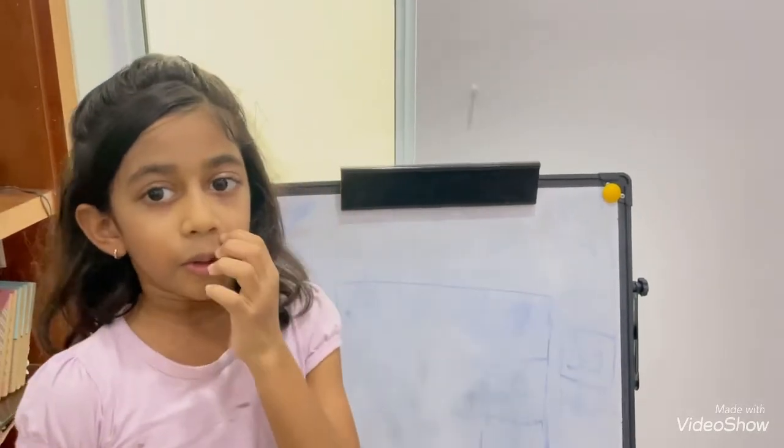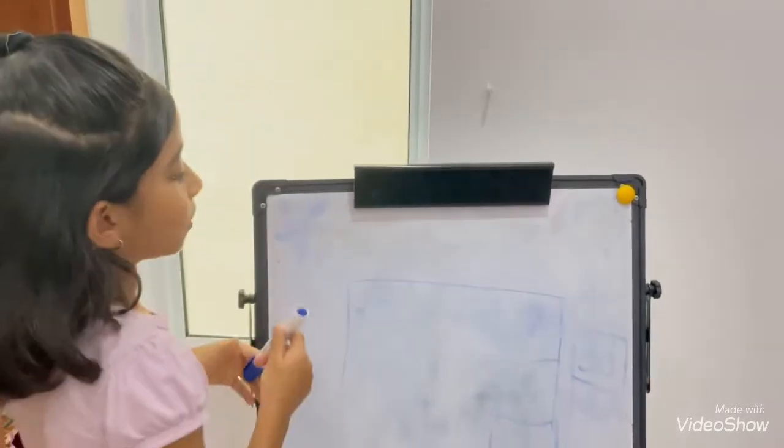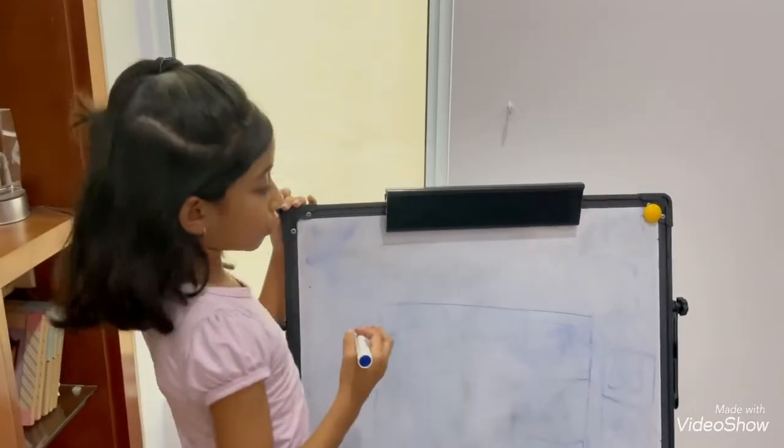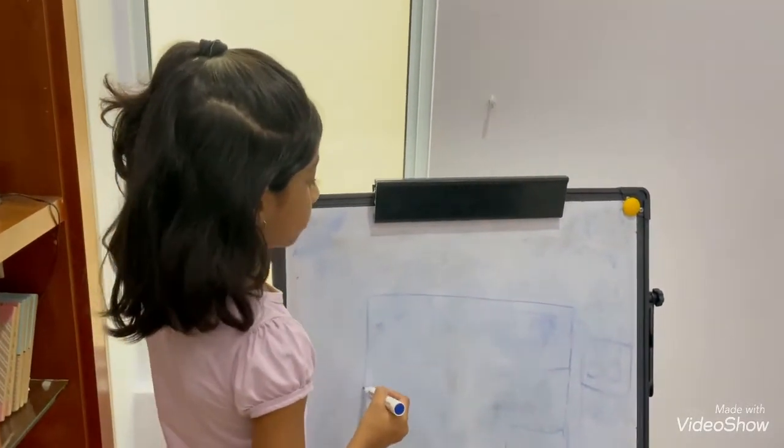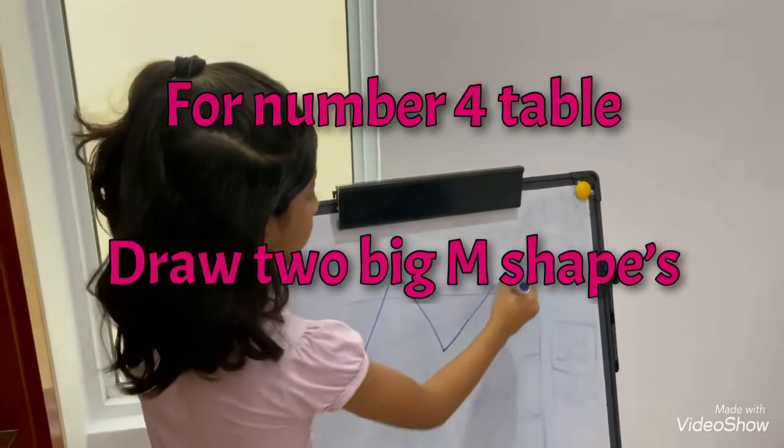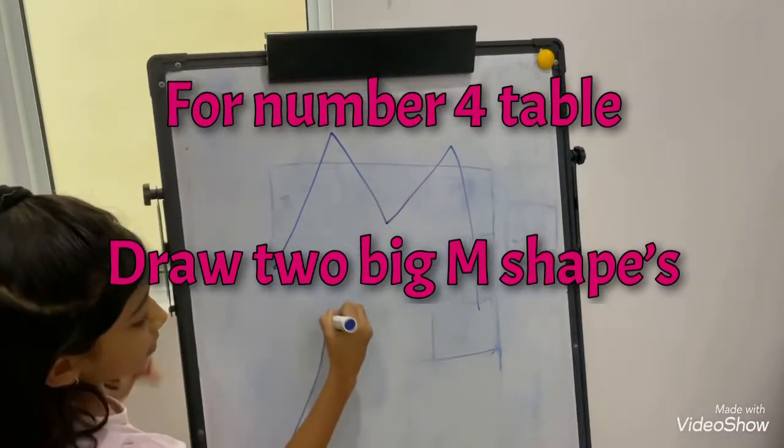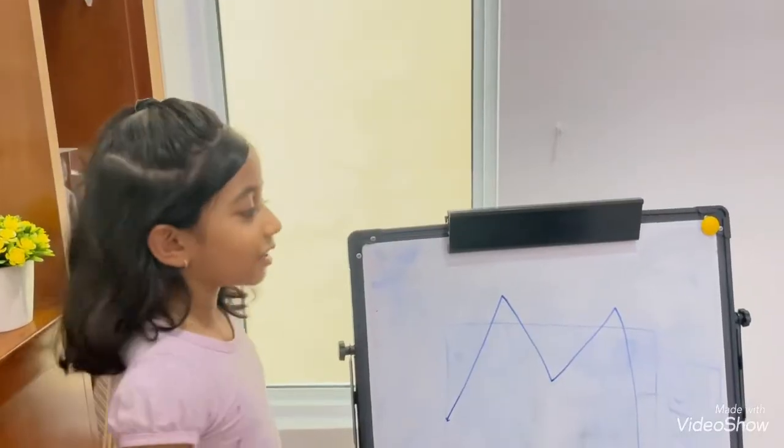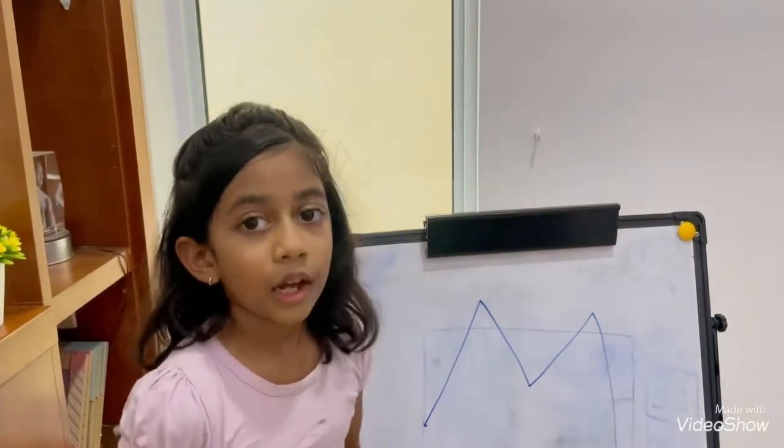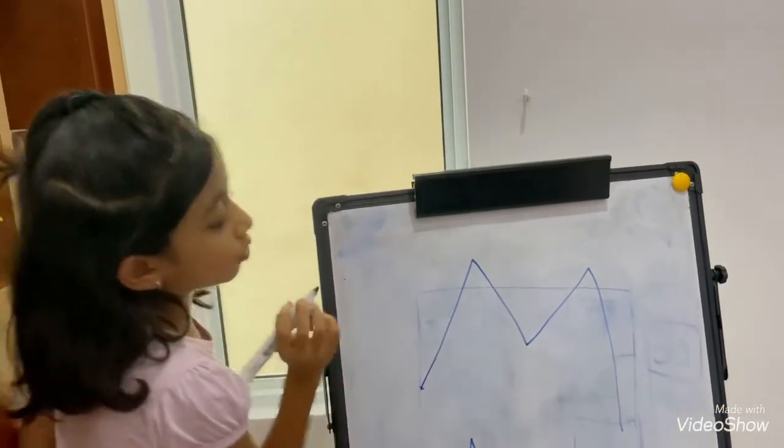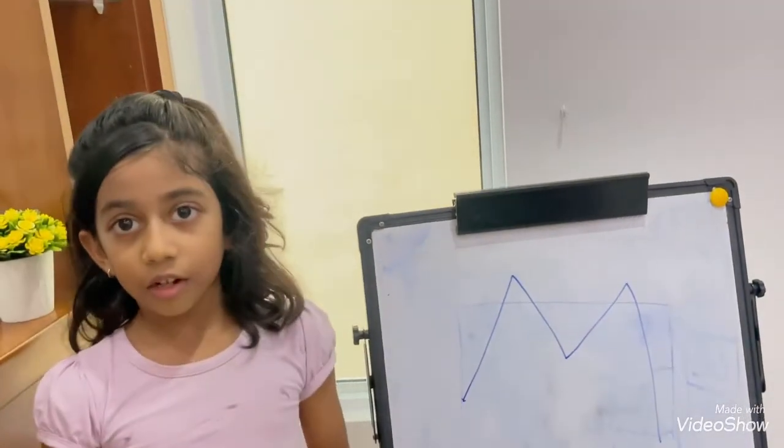We already know 2 times table and 3 times table. Now I am going to show you the 4 times table. So first, 4 times table is very similar to 2 times table. You guys all remember 2 times table and it is very similar to 4 times table. So in 2 times table the secret numbers are 2, 4, 6, 8.